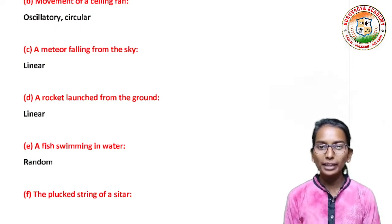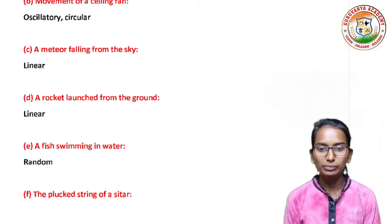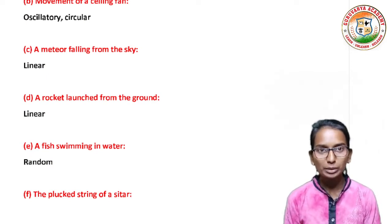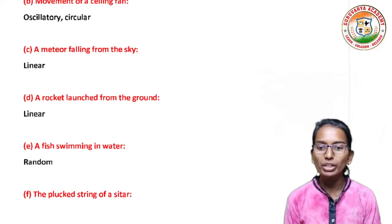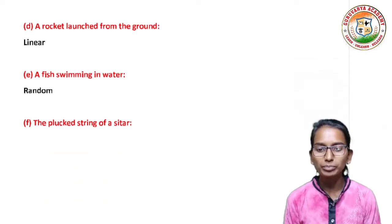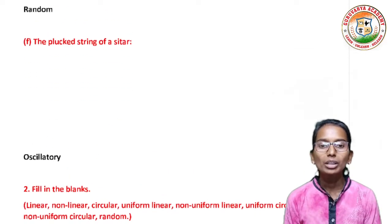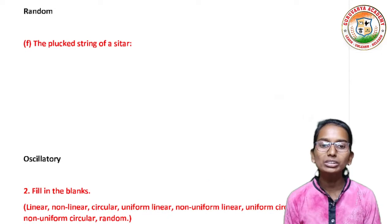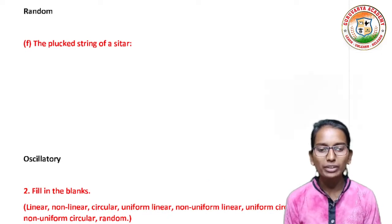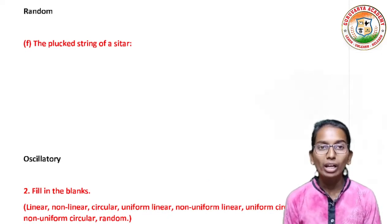A rocket launched from the ground is linear. A fish swimming in water is random. Last, the plucked string of a sitar is oscillatory.